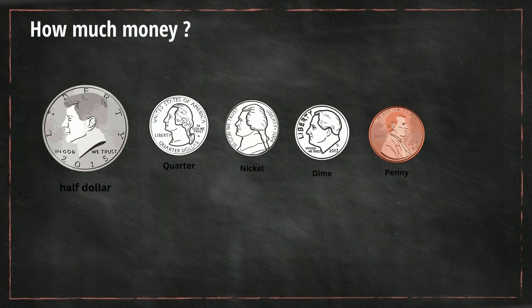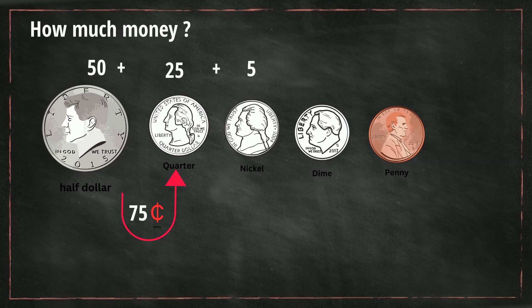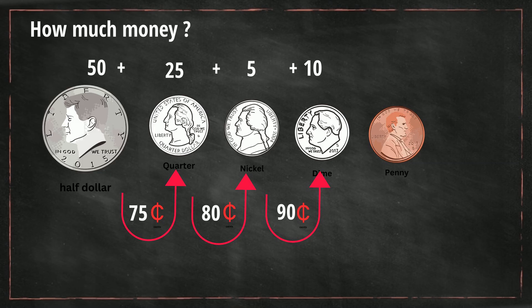In this first example we have 50 plus 25 is 75 cents. Then we will add 5 cents and that makes it 80 cents. Then let's add a dime which is 10 cents. So now we're up to 90 cents plus 1 cent. So we have 91 cents total.